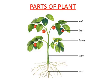Now we are going to study parts of plants. On your screen, it is given: Number 1 is Leaf, Number 2 is Fruit, Number 3 is Flower, Number 4 is Stem, and Number 5 is Root. You all know about these parts of a plant because you have read about them in previous classes.